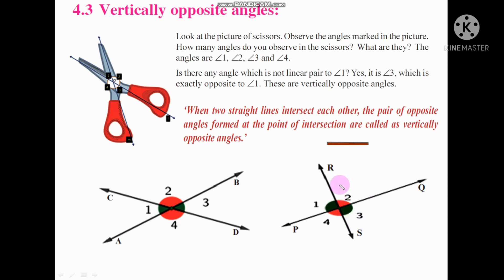Similarly, in the second figure, lines PQ and RS are two straight lines that intersect, forming four angles. Angle 1 is vertically opposite to angle 3, and angle 2 is vertically opposite to angle 4. Now you have understood what vertically opposite angles are.